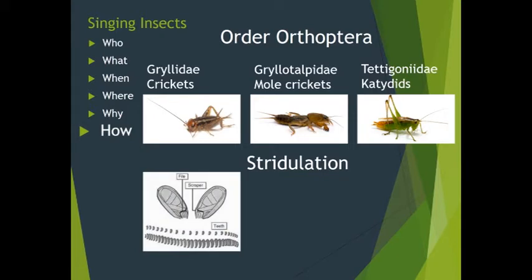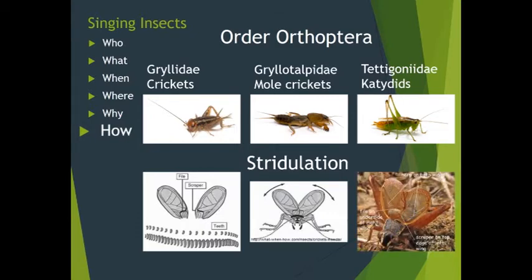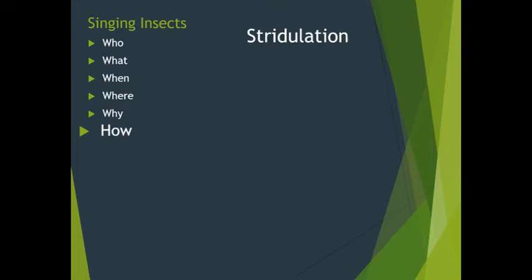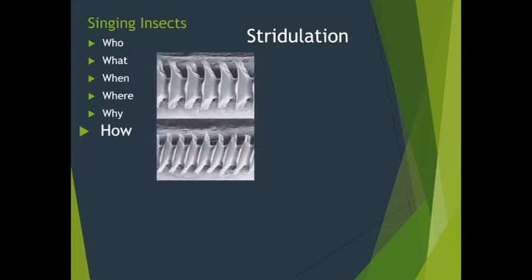These insects have rows of hard teeth near the base of the fore wings. A file is on the lower surface of the upper wing and a scraper is on the upper surface of the lower one. To sing, a male raises his wings then opens and closes them rapidly; the file passes over the scraper, emitting a pulse of sound during the closing stroke. The rate at which the teeth strike the scraper determines the pitch, expressed in kilohertz. The number of teeth ranges from as few as 10 to 1,300 among different species, so calls can range from 1.5 kHz to well over 20 kHz.